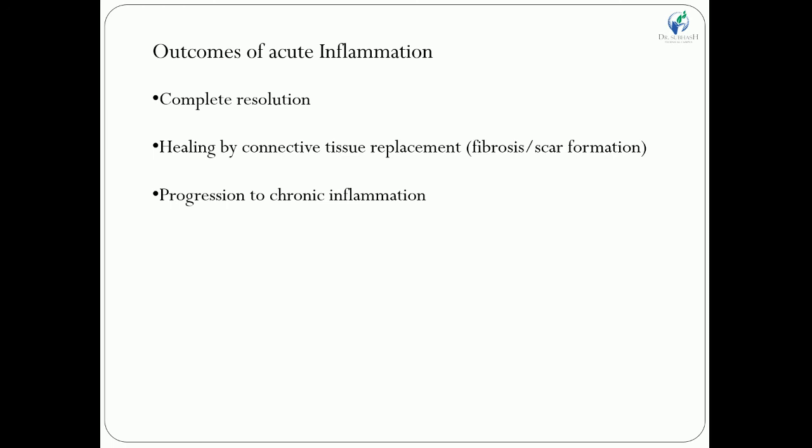To summarize today's lecture: we discussed plasma proteases or plasma-protein-derived mediators. The Hageman factor acts as the initiator. We covered four systems: the kinin system (kallikrein and bradykinin), the clotting system (fibrin formation), the fibrinolytic system (plasmin with anti-coagulant properties), and the complement system (C1 to C9). Thank you very much.